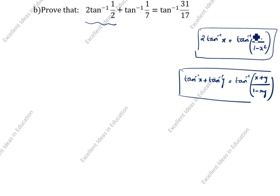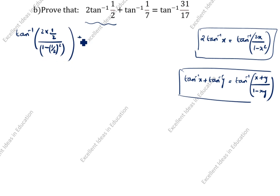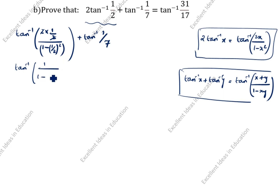We will split as per this formula: tan inverse of x where x is 1 by 2 — so 2 into 1 by 2 divided by 1 minus 1 by 2 squared, plus tan inverse of 1 by 7. The 2 and 2 cancel. So we get tan inverse of 1 divided by 1 minus 1 by 4, plus tan inverse of 1 by 7.